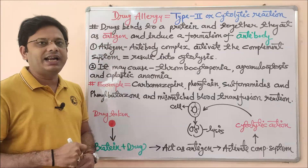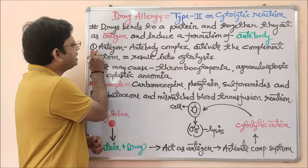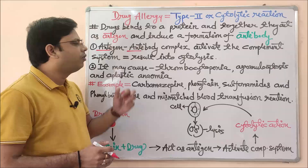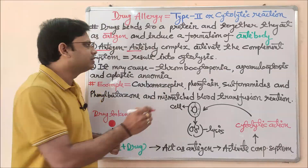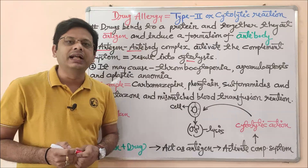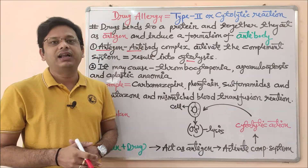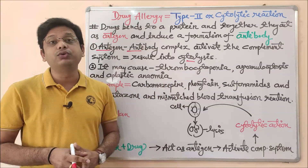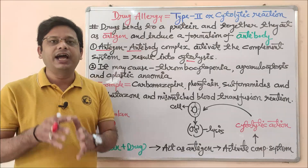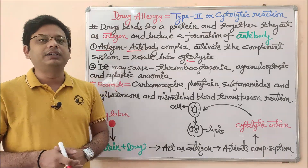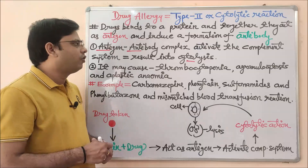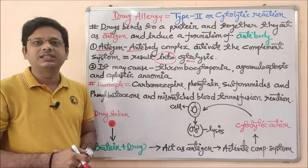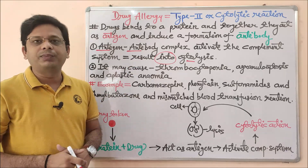Coming to the next step in this Type 2 cytolytic reaction: this antigen-antibody complex activates the complement system of our body, which results in cytolysis. Cytolysis means lysis of the cell at which the interaction is taking place. The complement system — our immune system — participates to fight against the antigen, and the result is ultimately a cytolytic reaction.